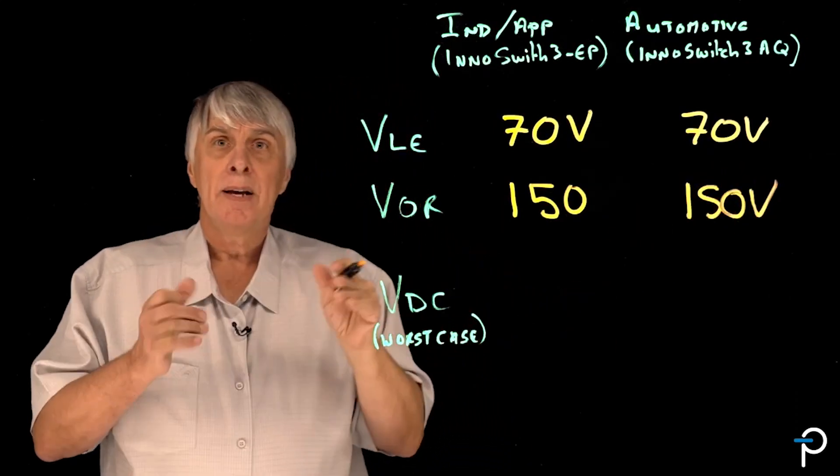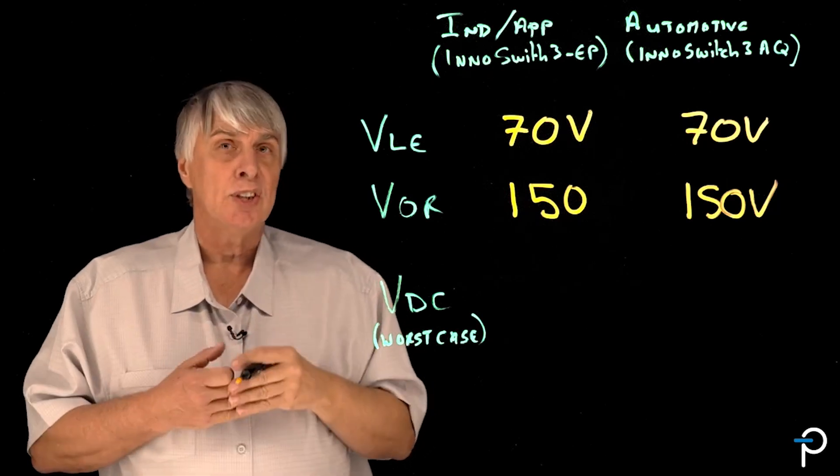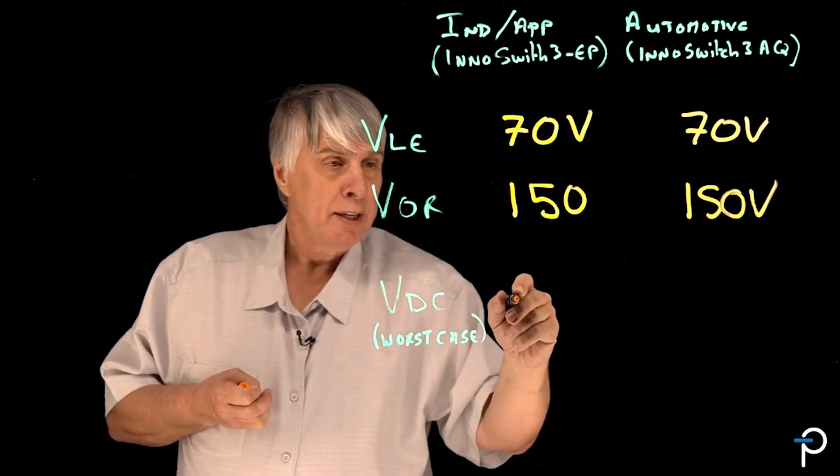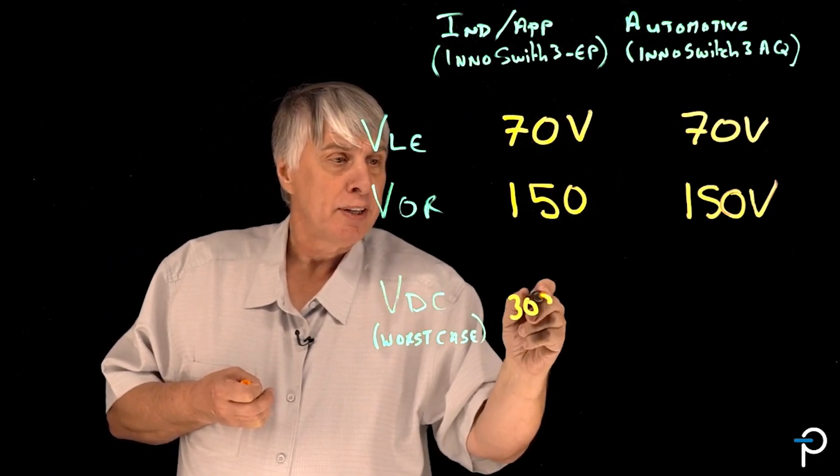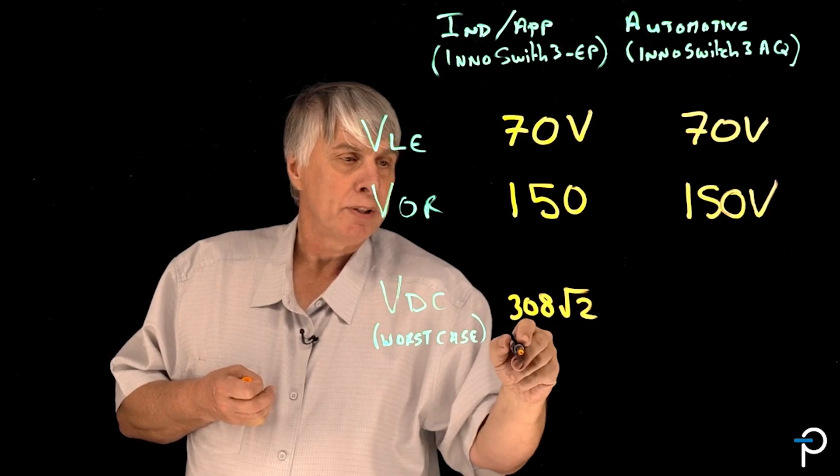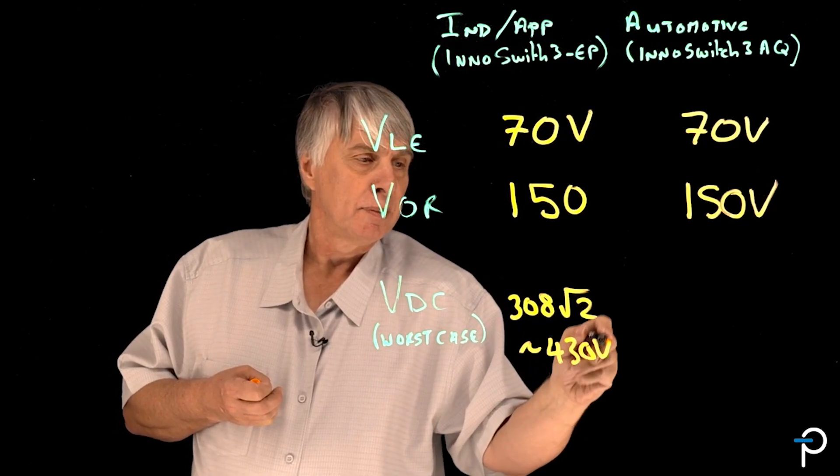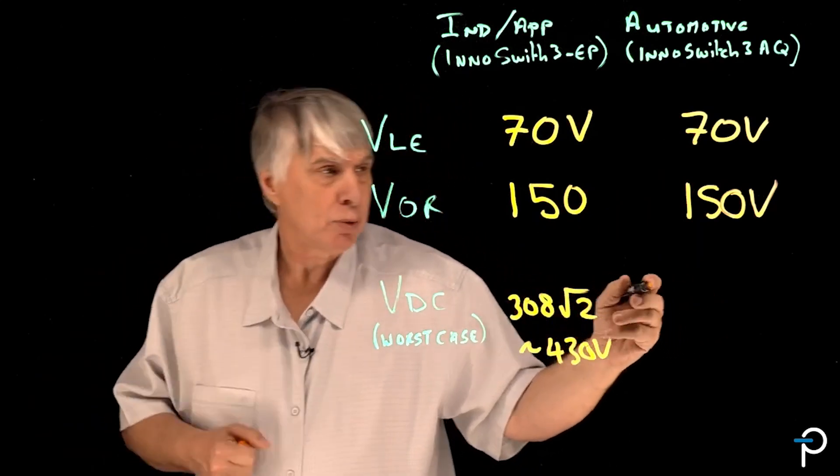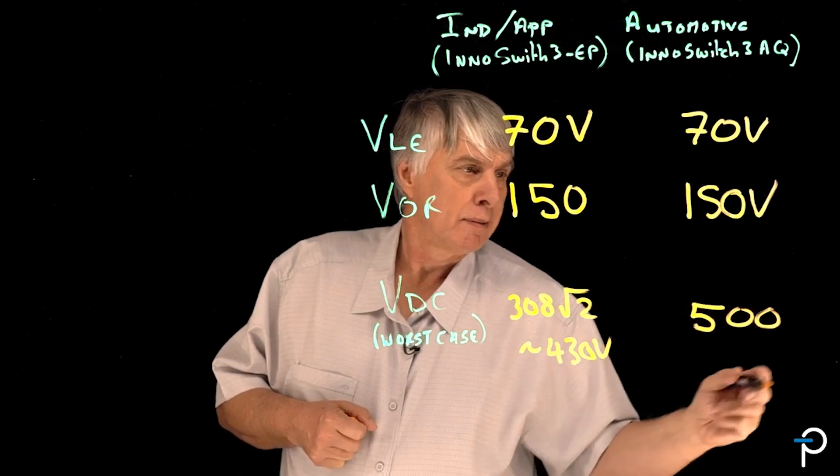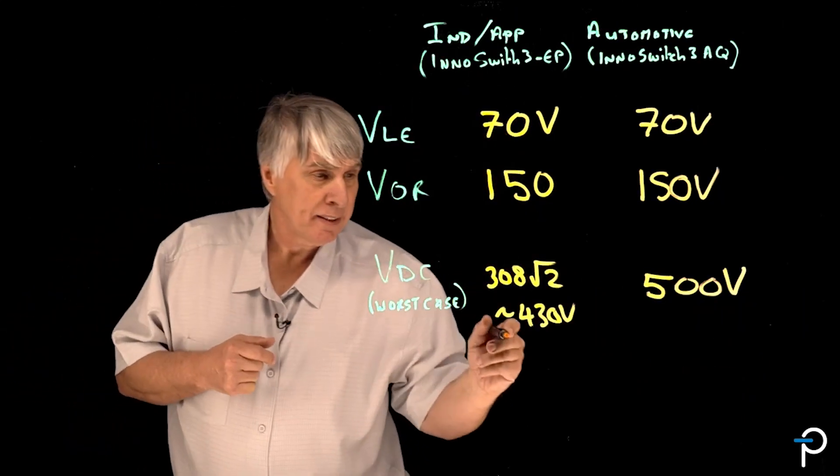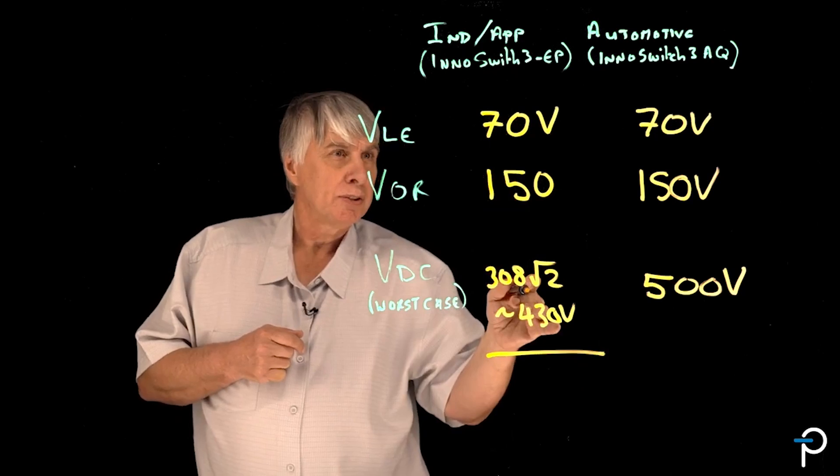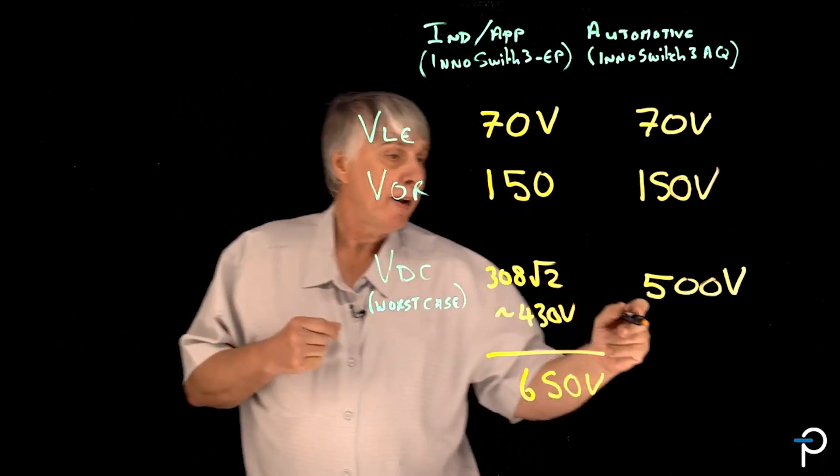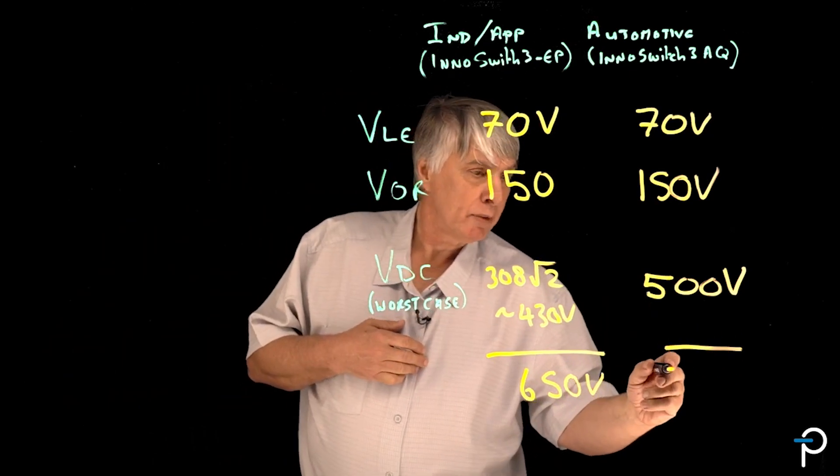Now let's consider the input voltage. We'll look at worst case conditions because that's what we're going to do to set the size of the voltage breakdown on our power switch. So for an industrial application that might be 308 root 2 or about 430 volts. For an automotive application we'll simply set that at 500 volts DC.